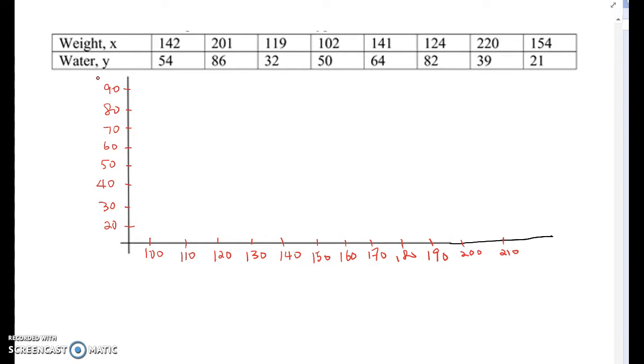Let's start plotting all those ordered pairs. The first one, 142 and 54. So 142 is around here, and then 54 around here, so it becomes around here. Now 201, 86. So 201, 86 is around here.